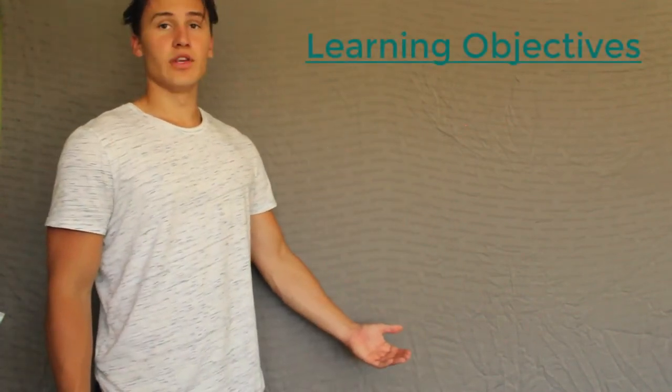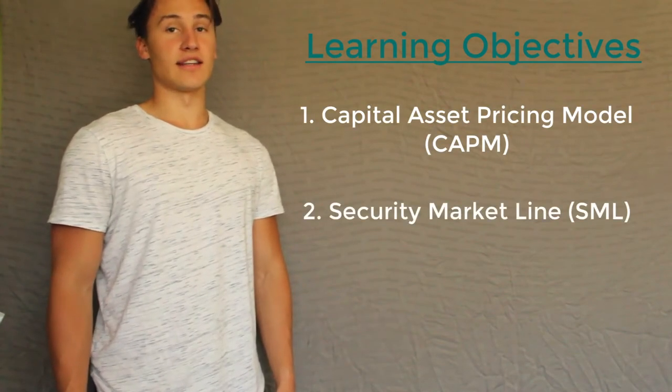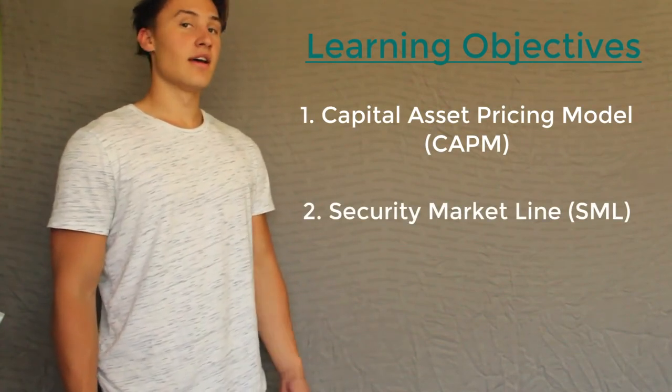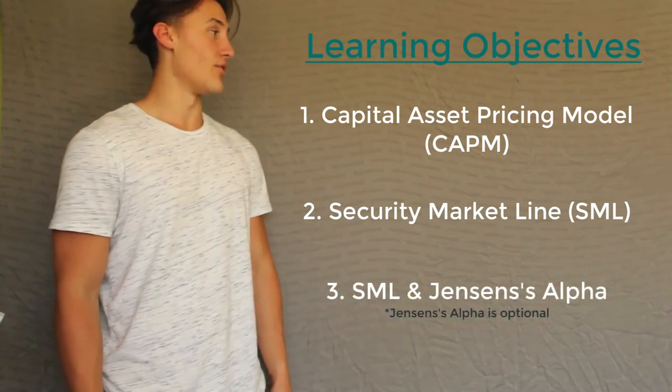We can use this to identify when a security is overvalued or undervalued. By the end of this video, you will learn about the CAPM formula, the security market line and its characteristics, and the use of SML and Jensen's Alpha in identifying mispriced securities.